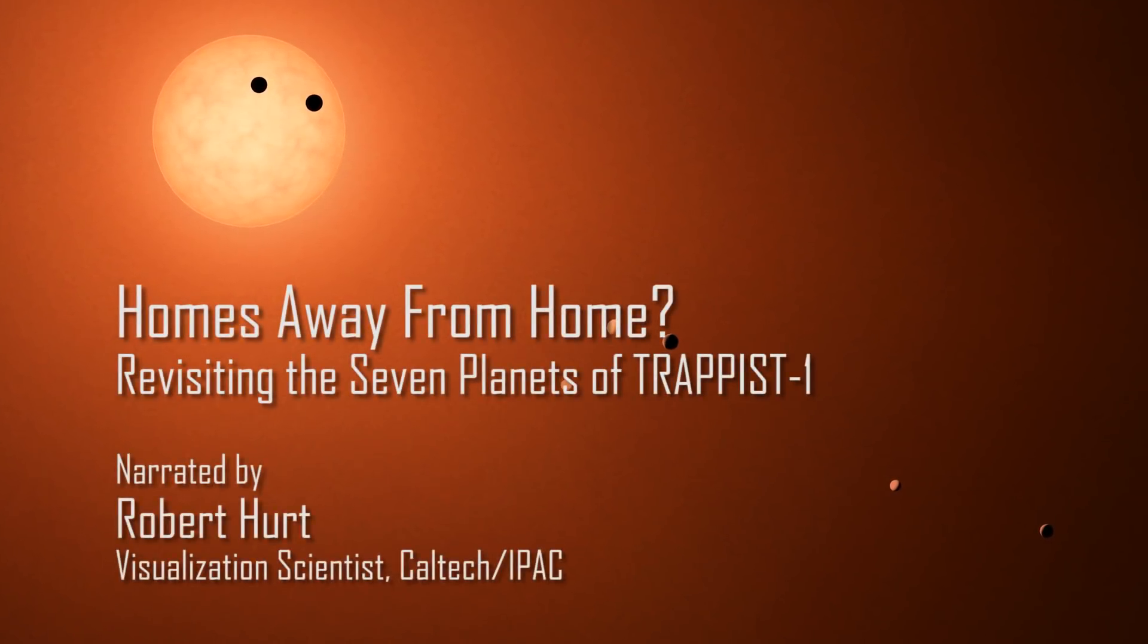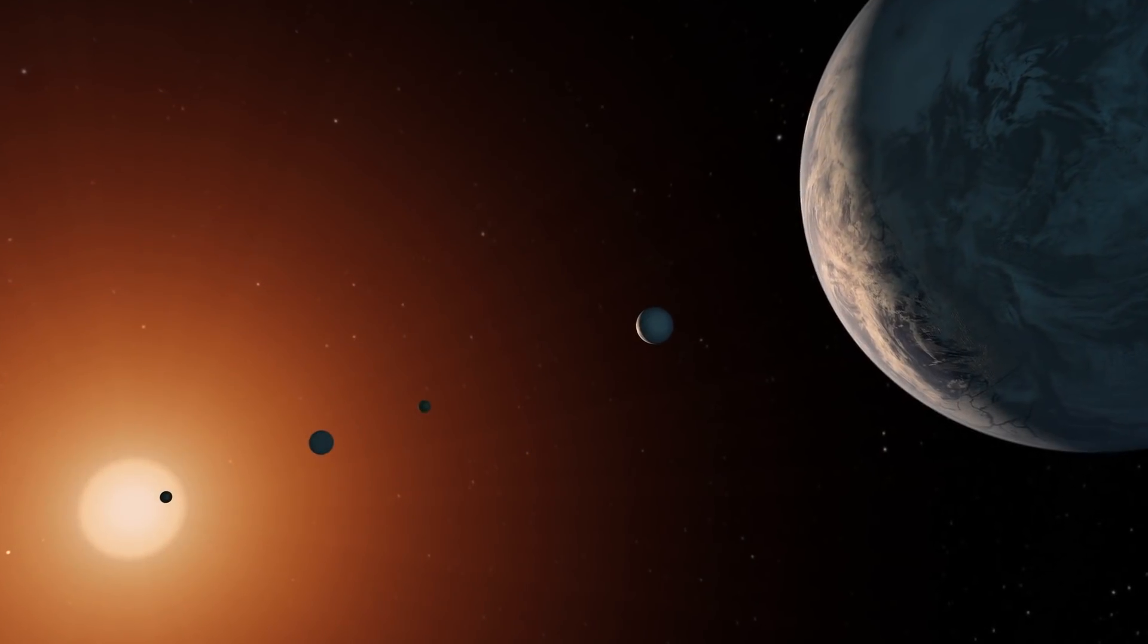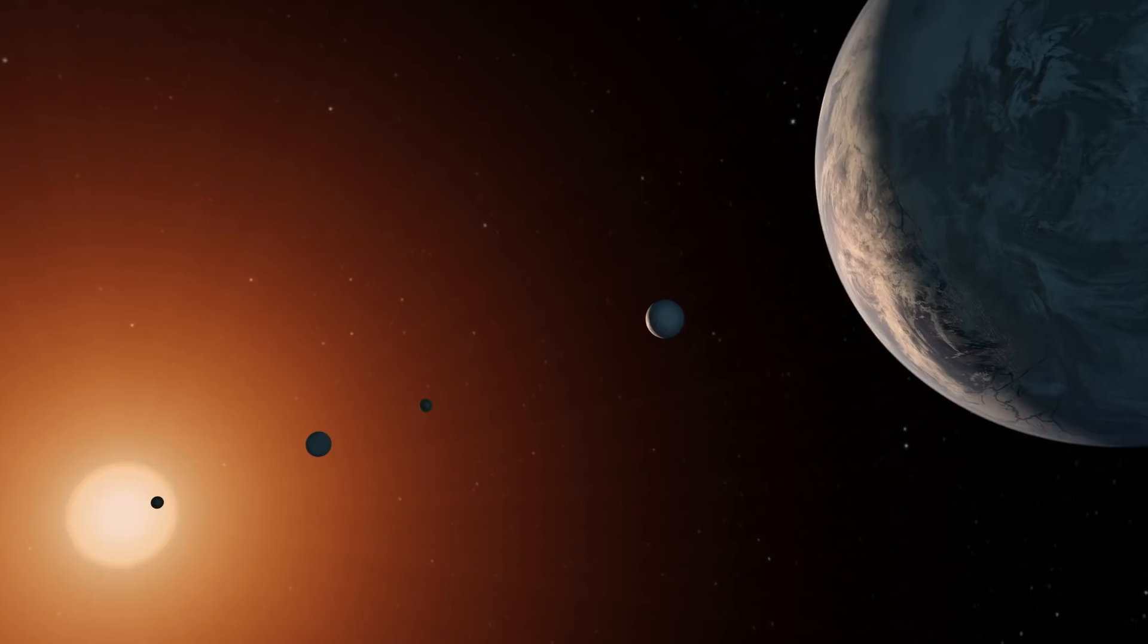In February of 2017, astronomers wowed the world with the discovery that a total of seven Earth-sized worlds orbited the faint star known as TRAPPIST-1.